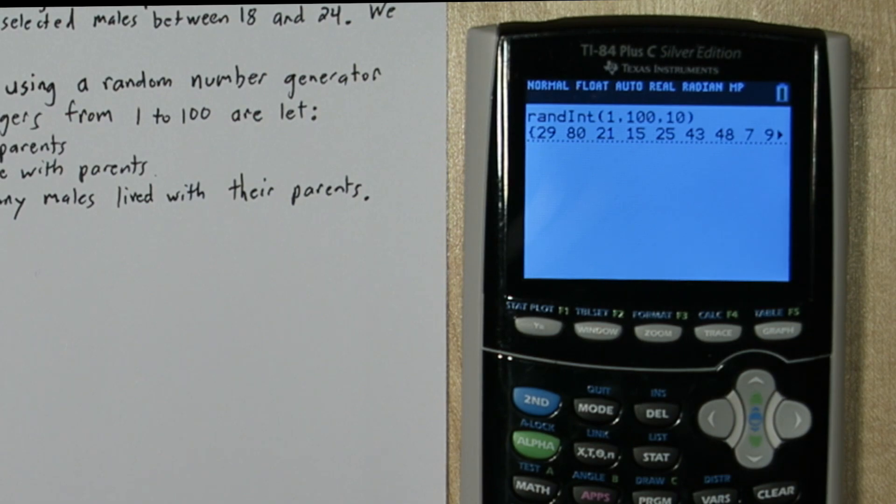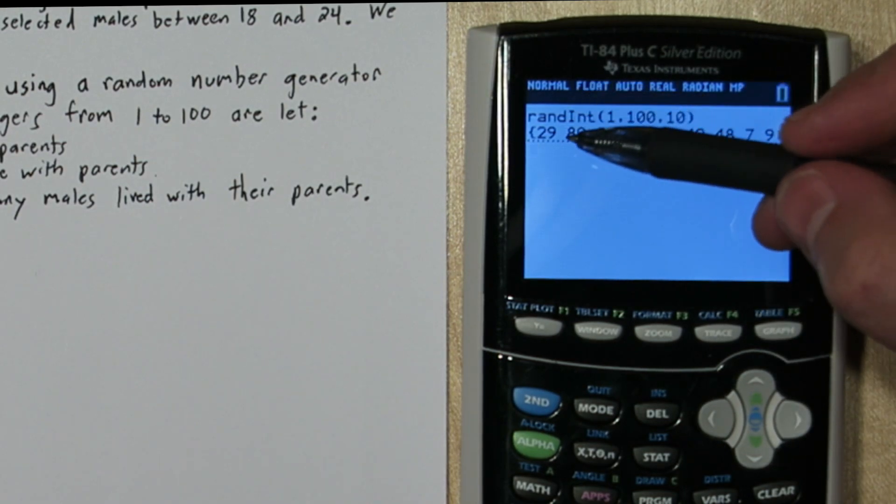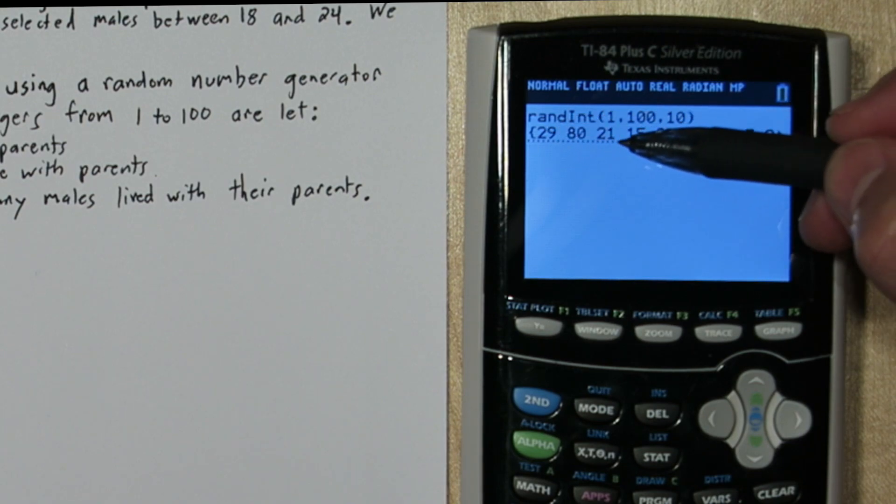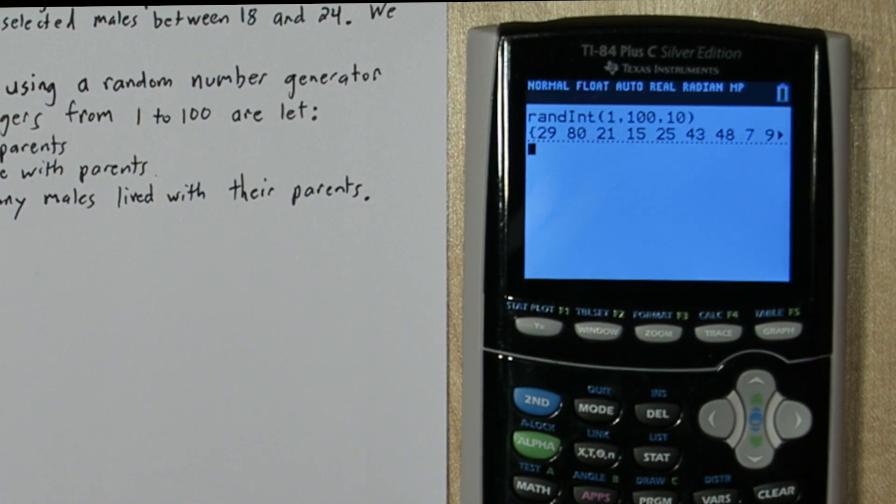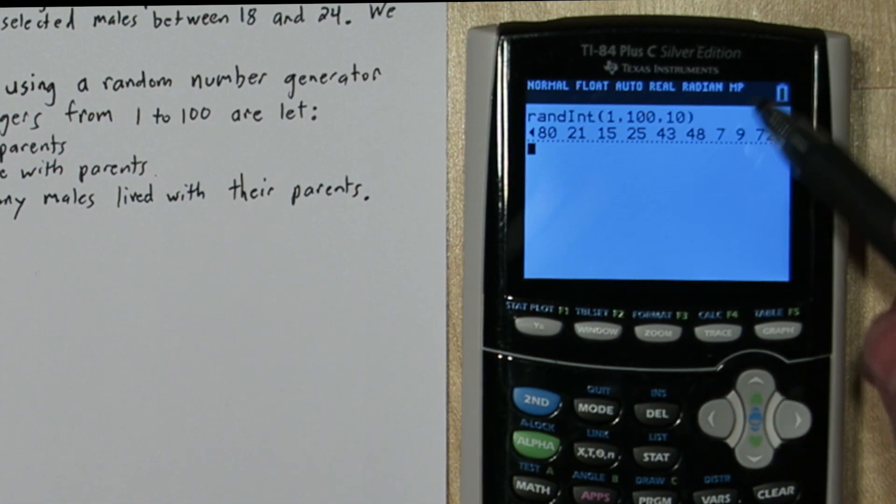So I need to count how many males did not live with their parents. Which means how many of these numbers are between 1 and 59? Looks like 29 is so 1, 2, 3, 4, 5, 6, 7, and then you have to press over 8.